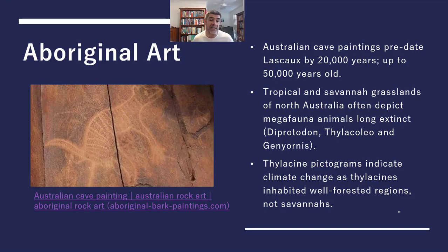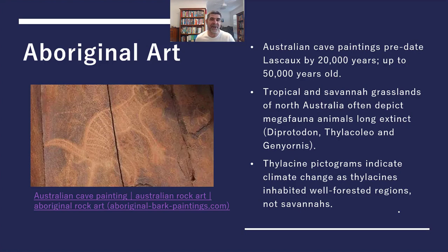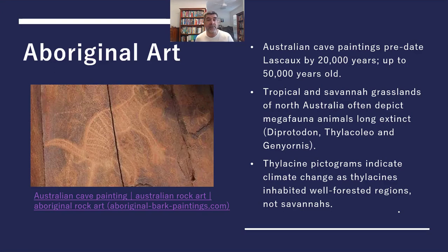The thylacine is the Tasmanian tiger. We know the Tasmanian tiger was still in Tasmania until around the 1920s and 1930s in some of the zoos, but they have now, as much as we can tell, gone extinct. They were also present on the mainland of Australia, and they are an indicator of change in the climate — they couldn't have been in some of the areas where we see them depicted, because the climate no longer suits the type of environment that they would have preferred.